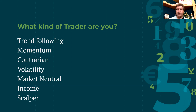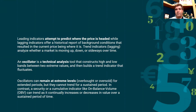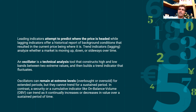Last but not least, especially in futures trading, you have scalpers — frequent traders looking for just a few points, wanting to get in and get out quickly. Their technical indicators will be very short-term, fast-moving indicators. Once you define your trader type, you can understand which indicators match your characteristics. Now, before we go further, let's cover some definitions. There are leading indicators — they attempt to predict where the price is headed, giving you a heads-up.